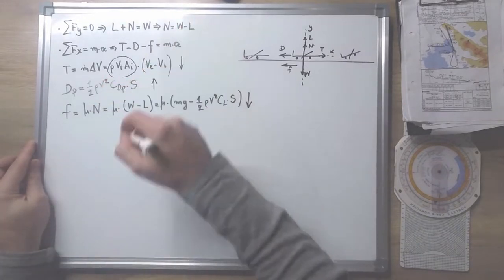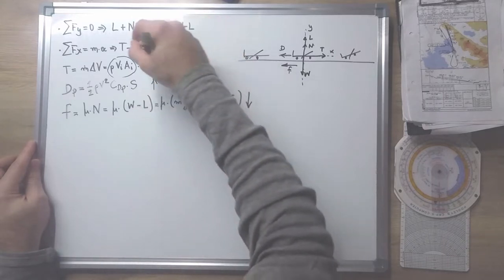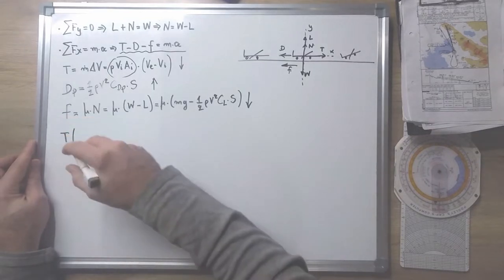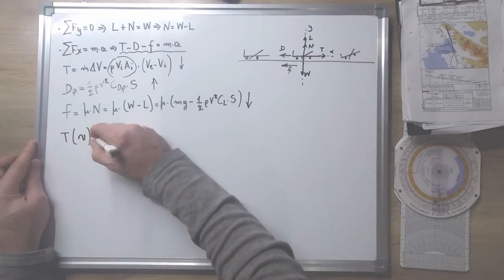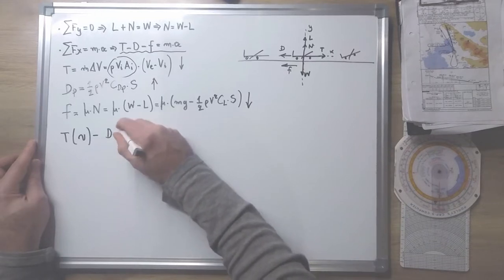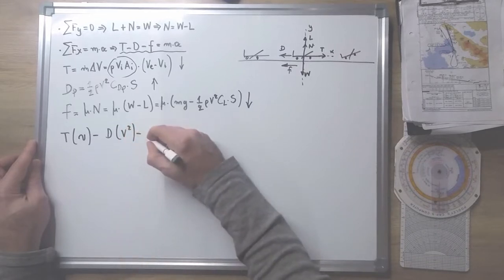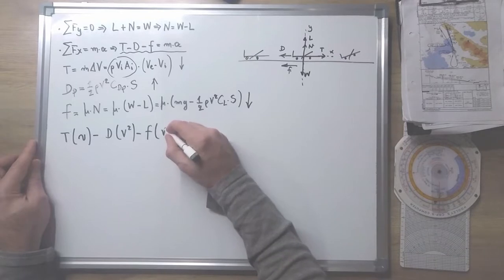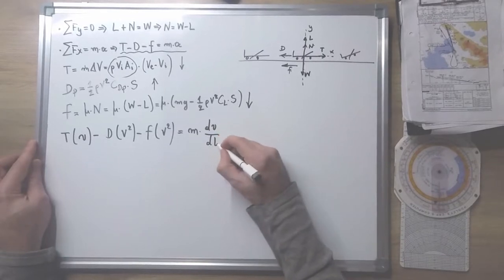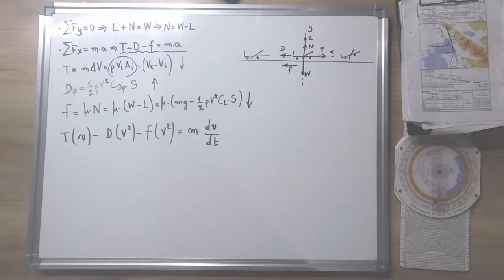So the forces are not constant and the acceleration will not be constant. If we rewrite this equation we have that thrust, which depends on aircraft speed, minus drag, which also depends on aircraft speed, minus friction, which also depends on aircraft speed, equals mass multiplied by acceleration. This is a differential equation, and in order to solve it we need to remember university mathematics or use specialized software.